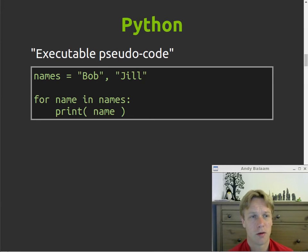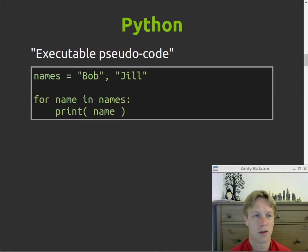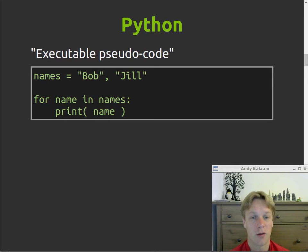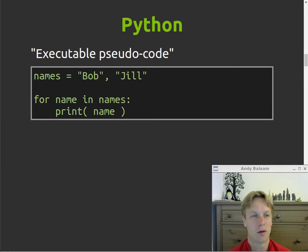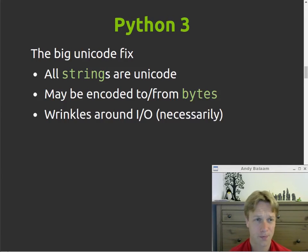Python is often called executable pseudocode. It looks very, very simple, especially for contrived examples. You can write Python code that looks like exactly what you would have written if you were just saying: imagine there was a language that just got out of your way and did what you wanted.